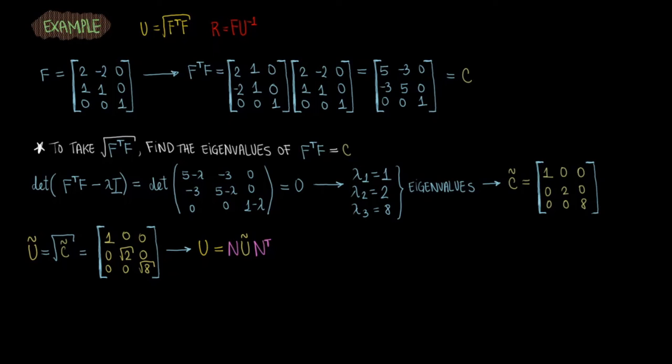To get the stretch tensor U from U tilde, we now need to use the following expression. In this expression, N is a tensor constructed from the normalized eigenvectors of C. So you found the eigenvalues of C earlier, now you need to find the eigenvectors.